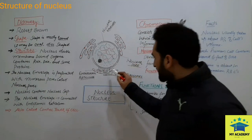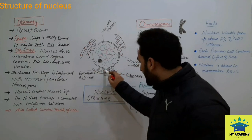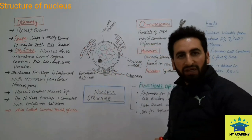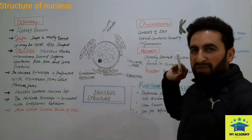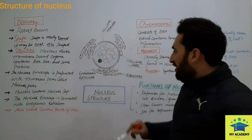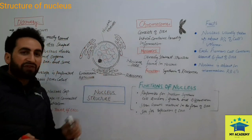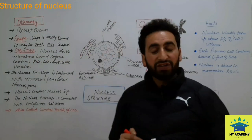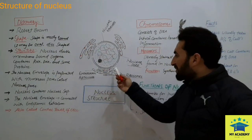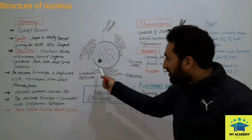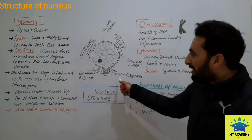The outer membrane of the nucleus extends to form a structure called the endoplasmic reticulum. If ribosomes are present on the endoplasmic reticulum, we call it the rough endoplasmic reticulum. If ribosomes are absent, then we call it the smooth endoplasmic reticulum.